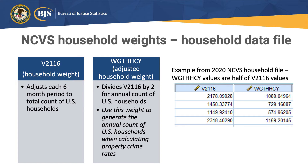Each NCVS annual data file is comprised of two six-month data files. The NACJD — the National Archive of Criminal Justice Data — which processes and publishes the NCVS data files, receives two six-month incident files, two six-month household files, and two six-month person files, and then combines them together to create annual data files. Because these six-month files are standalone files and include person and household weights that are representative of the entire population, the person and household weights must be adjusted when combined, or they would be doubling the population.